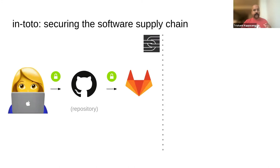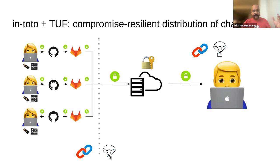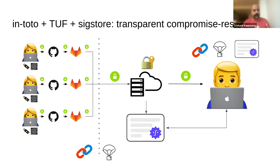It uses three pieces of open source technology. The first is called In-toto — that secures your software supply chain from your developers all the way down to your CI/CD. The second is called TUF, which is the compromise-resilient distribution of your software supply chains and associated artifacts. The third is Sigstore, which gives you transparent compromise resilience so you can see the history of every single artifact you ever released, end to end.